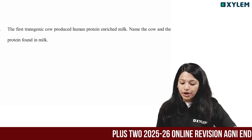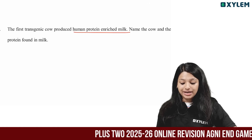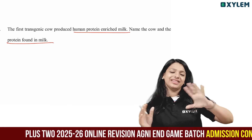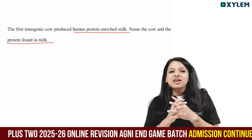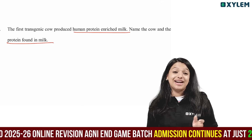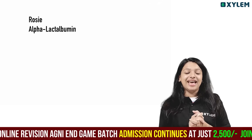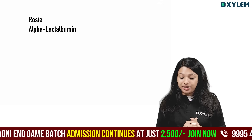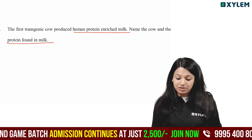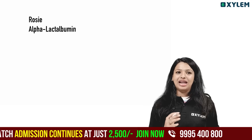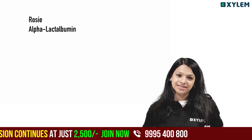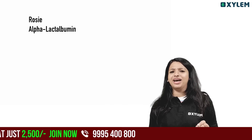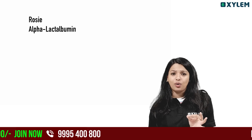First transgenic cow produced human protein enriched milk. Name the cow and the protein found in the milk. The first transgenic cow is called Rosie, and the milk is enriched with alpha-lactalbumin. You can mark it from the NCERT textbook.